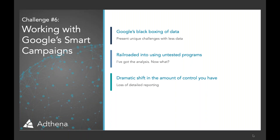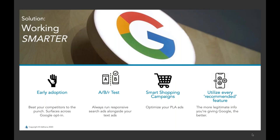Challenge number six is working with Google Smart Campaigns. This is an unsurprising change in the space that forces us to reevaluate our usual day-to-day. Not only are more metrics and data being removed from view — such as search queries from shopping, or the much-discussed change of average position — but we're also being railroaded into very specific paths to use certain new functionality. It causes a dramatic shift in the amount of control we have, including changes to detailed reporting, which is why we often see marketers double down on those micro adjustments.